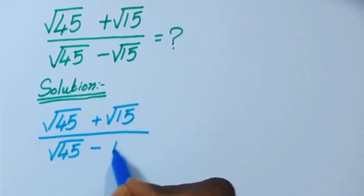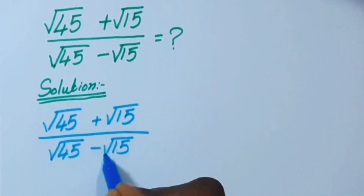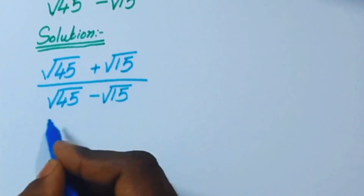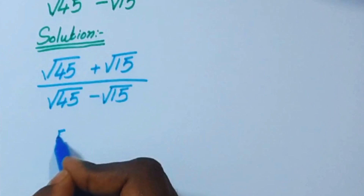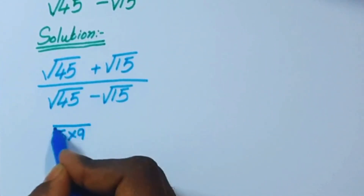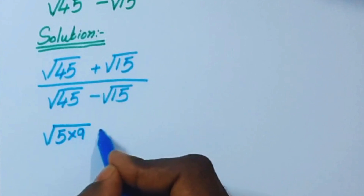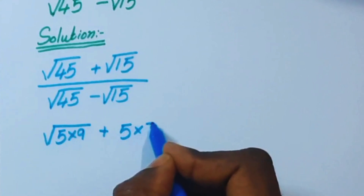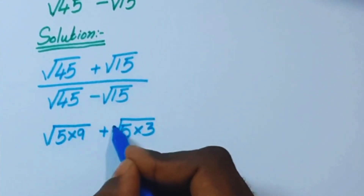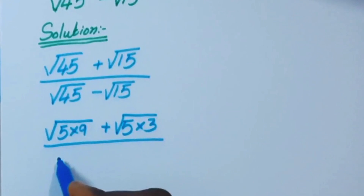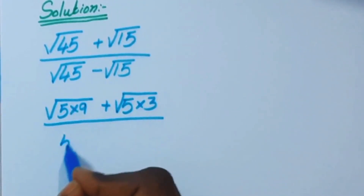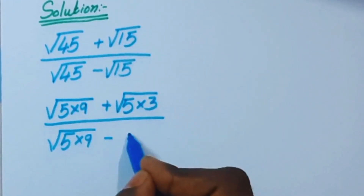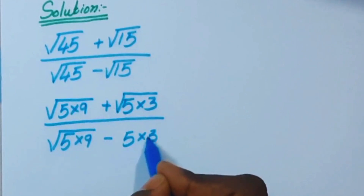Now this 45 can be written as 5 times 9, plus this 15 can be written as 5 times 3, all over 5 times 9 minus 5 times 3.